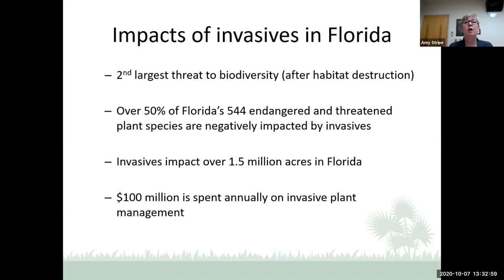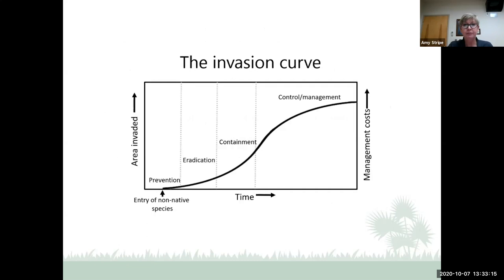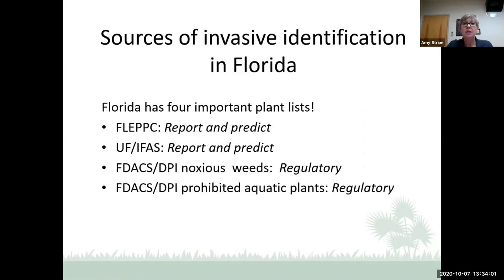In Florida, invasives are the second largest threat to biodiversity after habitat destruction. Over 50% of our endangered and threatened plant species are negatively impacted by invasives. They impact 1.5 million acres in Florida, and $100 million is spent annually on invasive plant management, largely on aquatic noxious weeds. A management cost chart shows that as you move through stages of trying to control invasives, both the area invaded and management costs increase. Prevention is obviously the best option; second best is early detection and rapid response at the eradication stage.